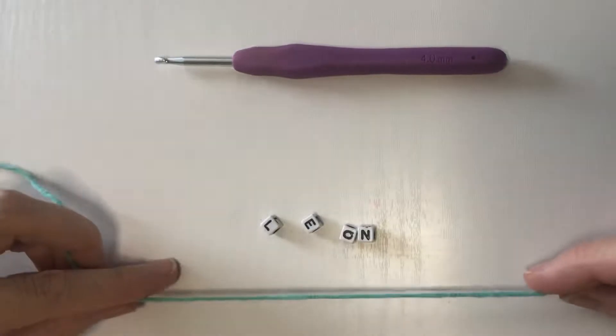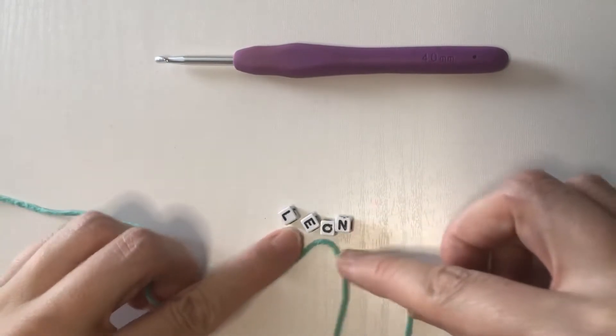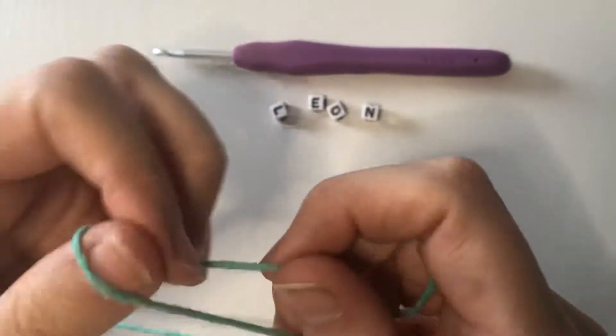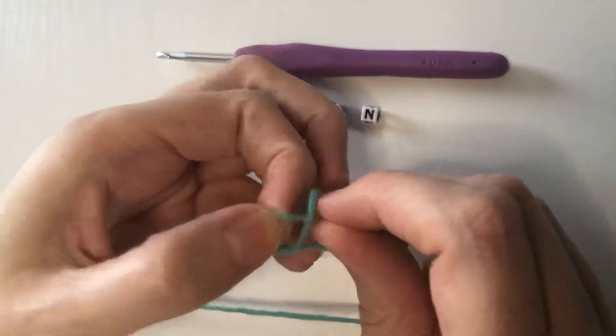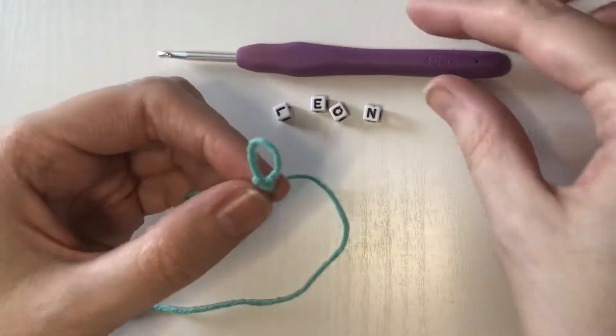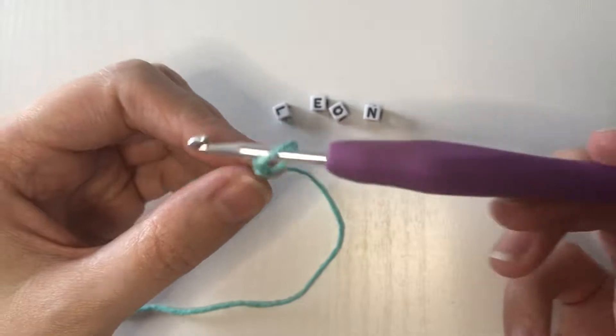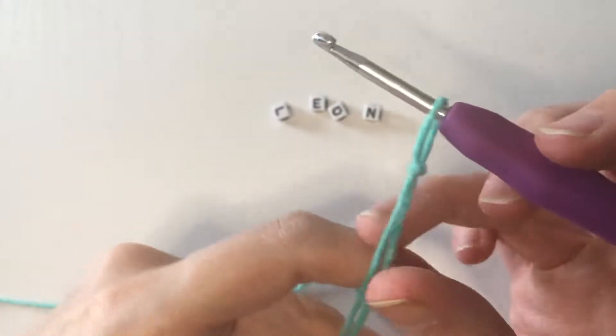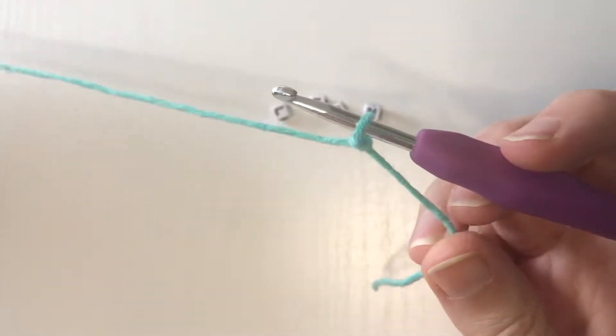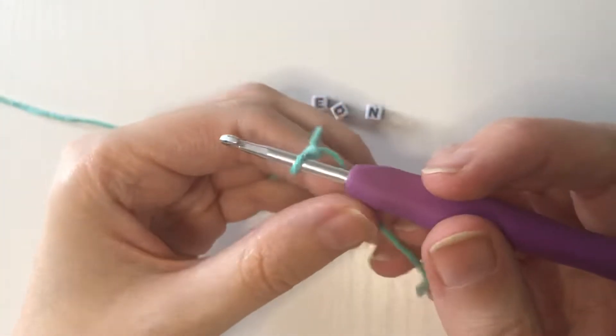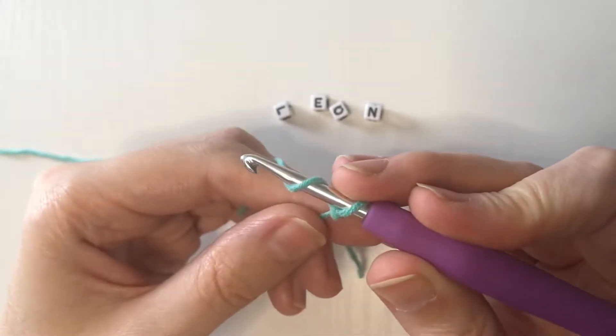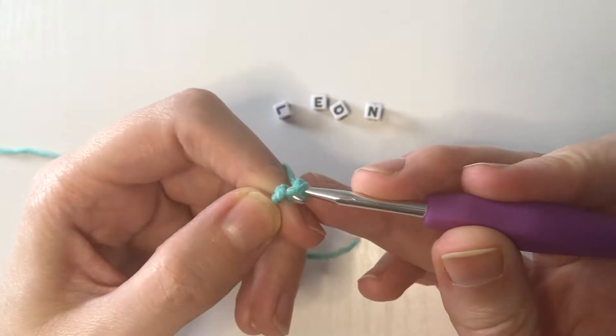Here are the letters we're gonna use and we're gonna start with our slipknot. I'm gonna put it on the hook, we're gonna tighten it. We hold one end and pull the long end, there we go. Now we're gonna make ten chains.